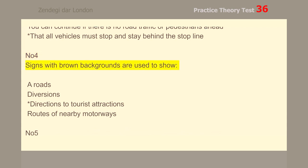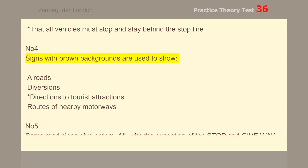Number 4. Signs with brown backgrounds are used to show directions to tourist attractions.